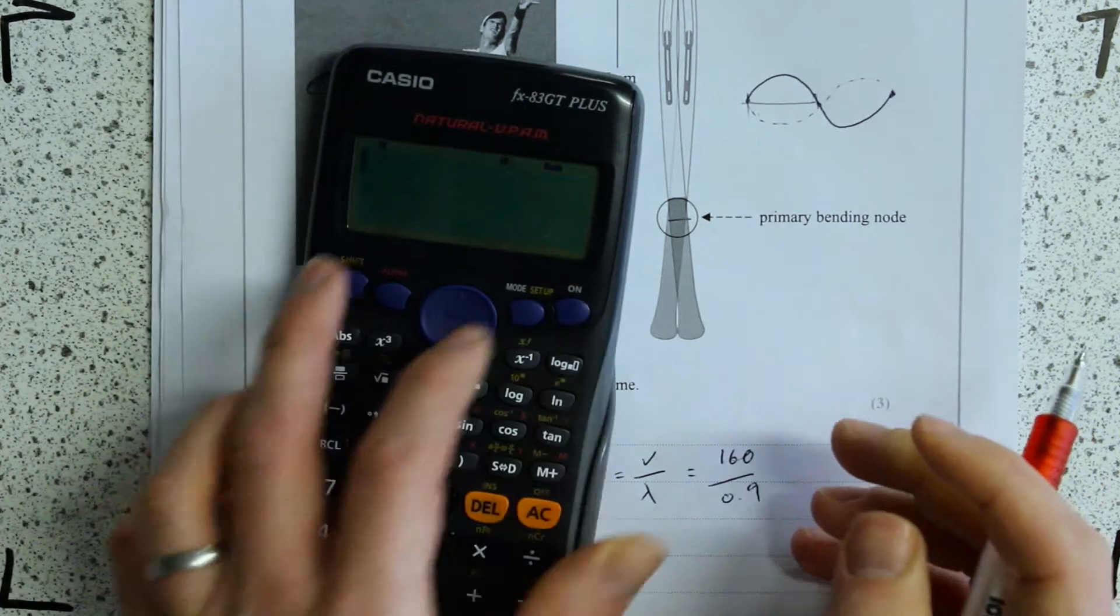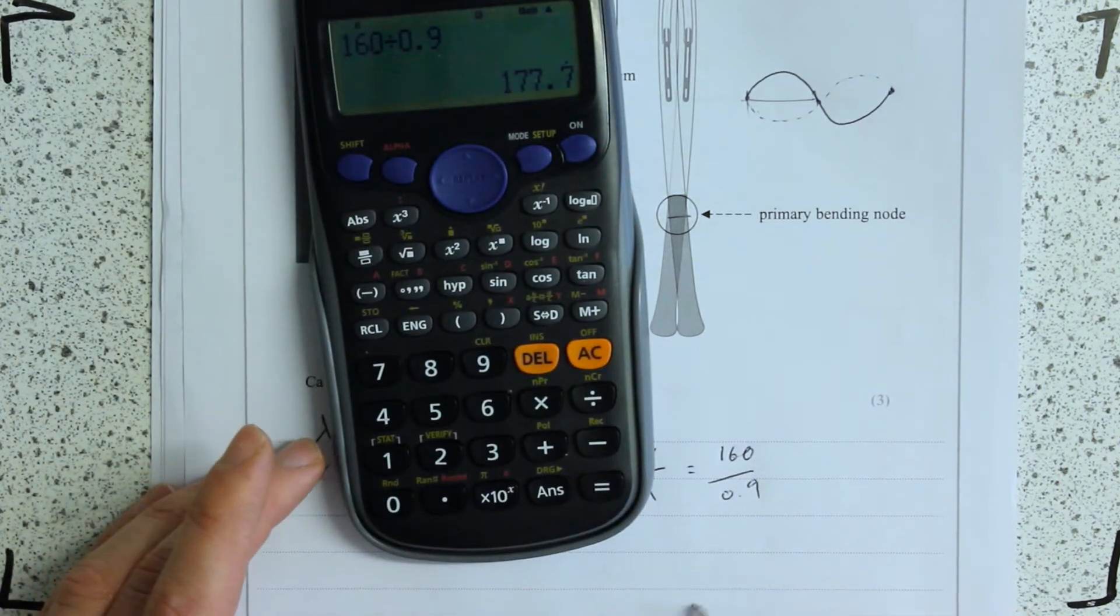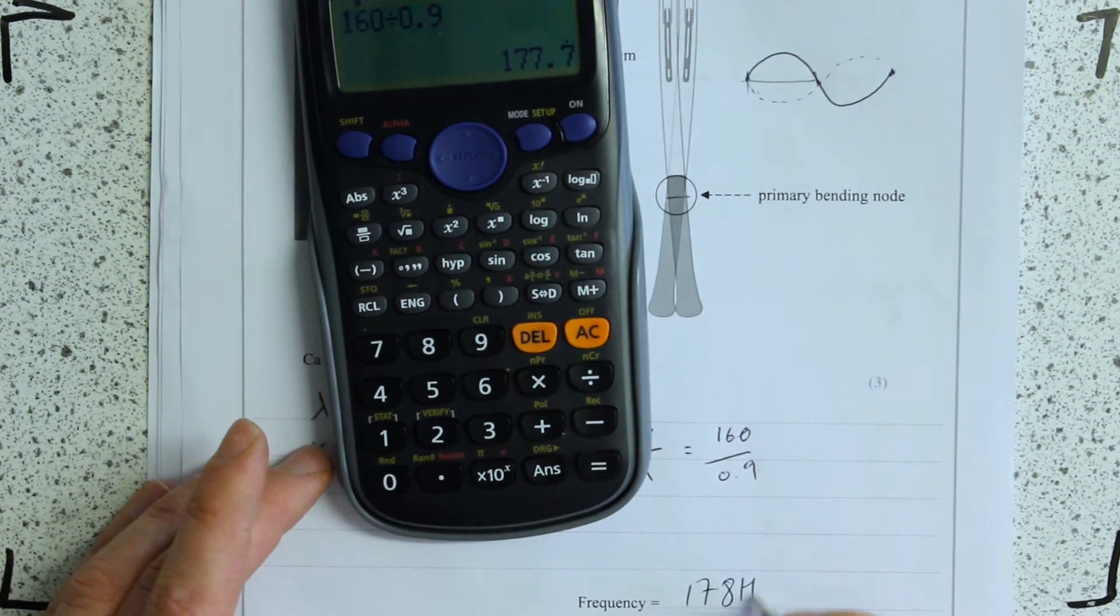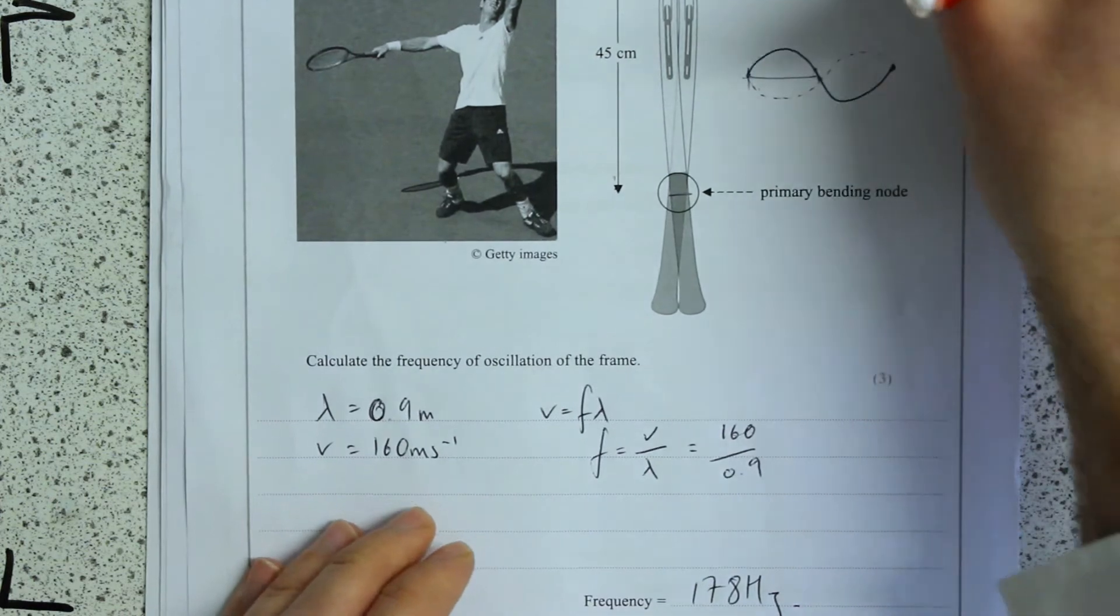So 160 divided by 0.9, boom, 178 hertz. OK, that one's pretty straightforward.